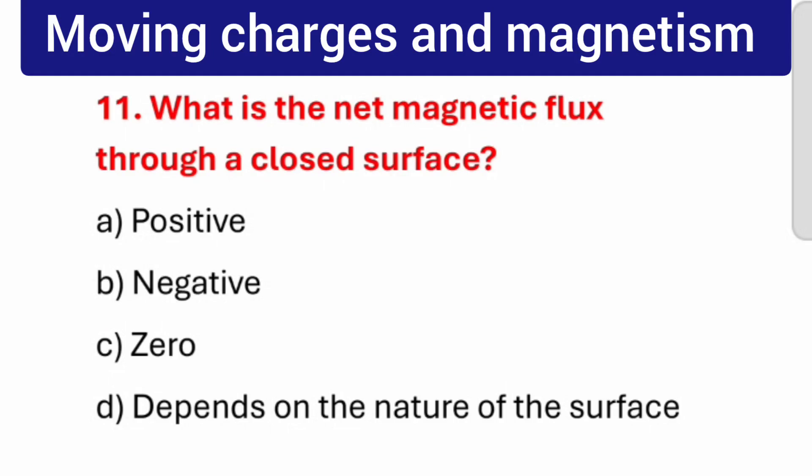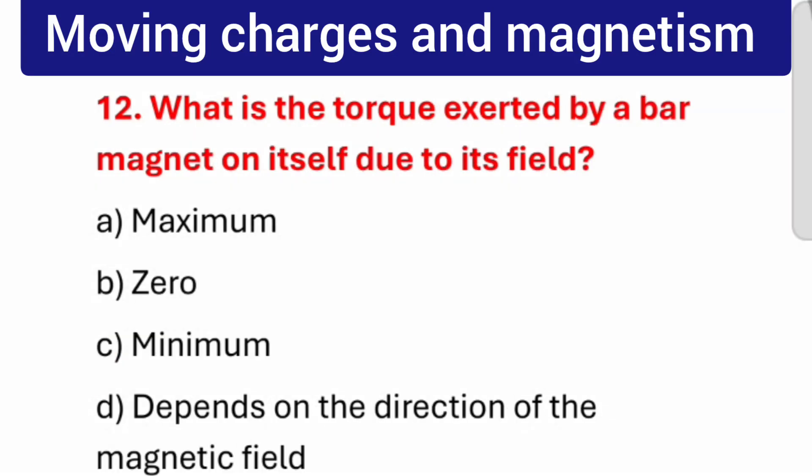Question number 11: What is the net magnetic flux through a closed surface? The correct answer is Zero. Question number 12: What is the torque exerted by a bar magnet on itself due to its fields? The correct answer is Zero.